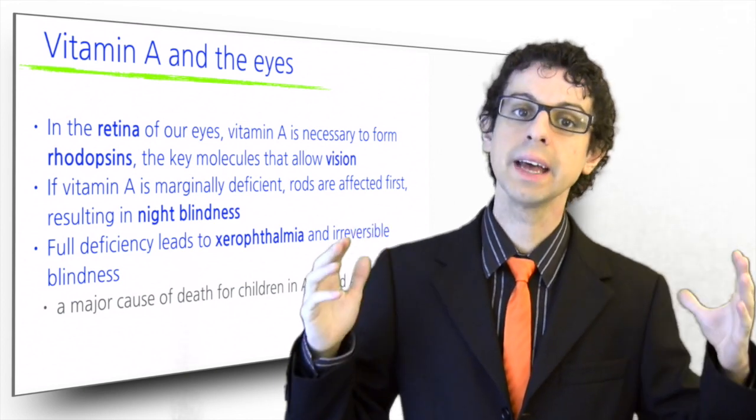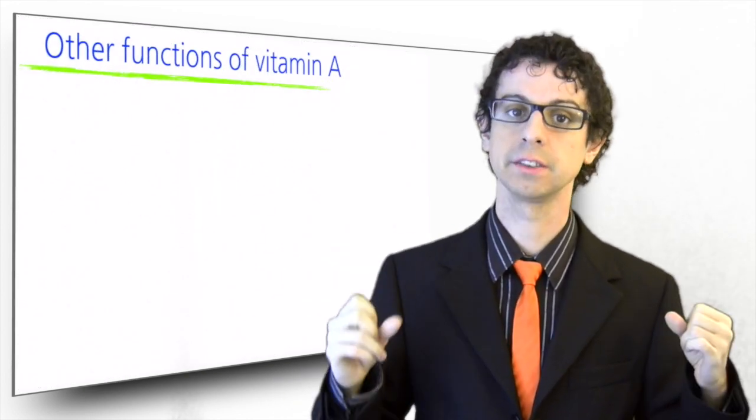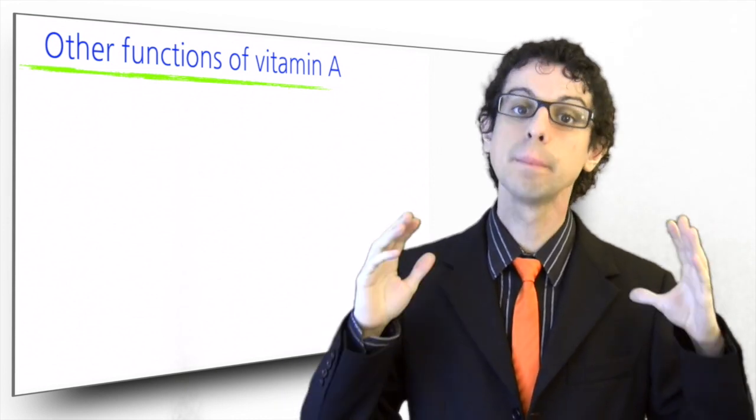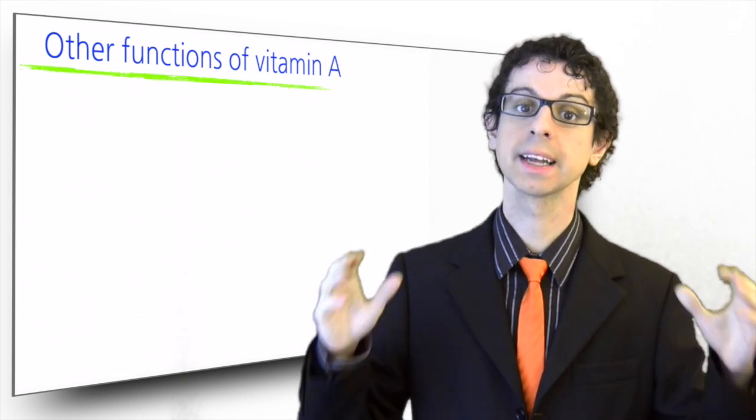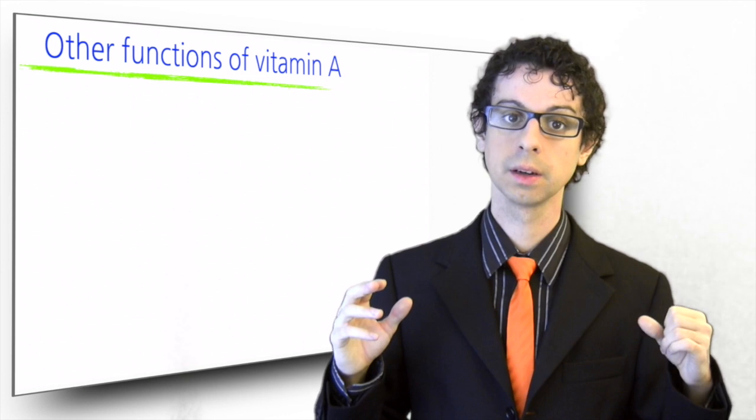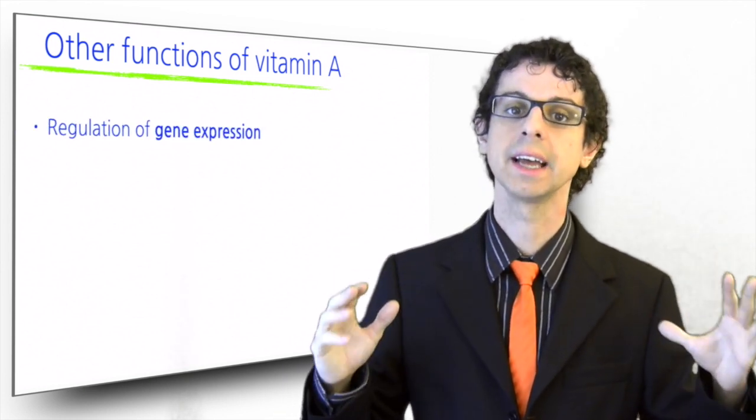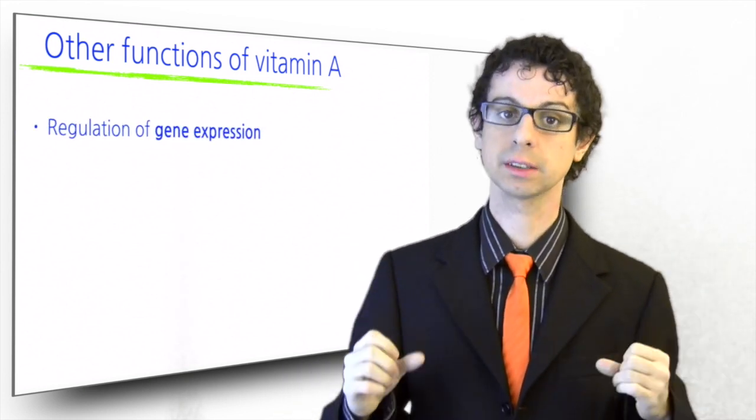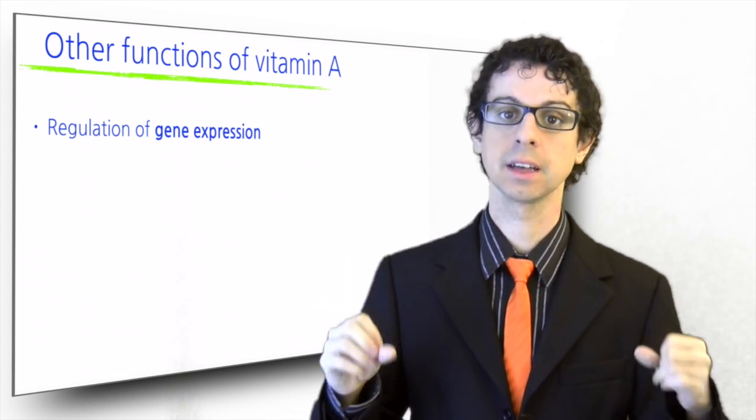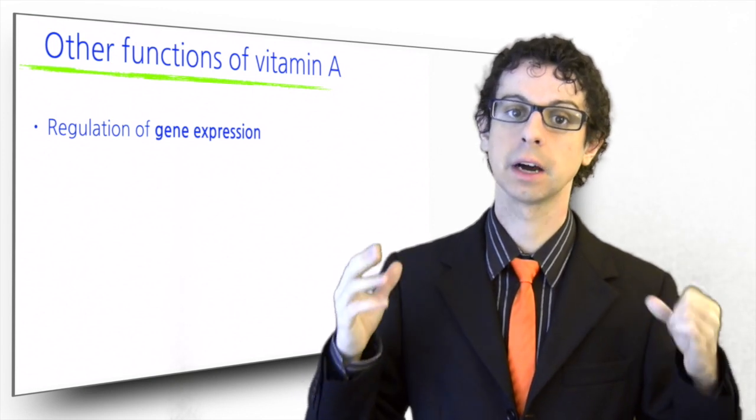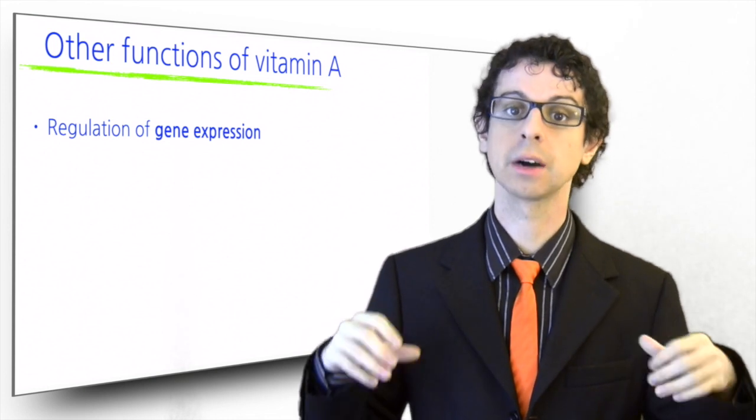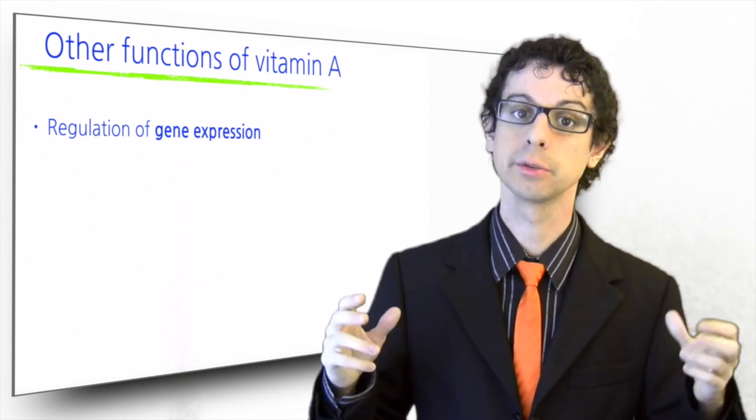Indeed, vitamin A does a lot more than just taking care of our night vision. And while full deficiencies are not common in our countries, marginal deficiencies are much more widespread and can still unfavorably impact our overall health. Vitamin A can bind to DNA and is able to regulate gene expression in many tissues in our body, and particularly our epithelial cells, those of our skin, our eyes and our mucous membranes, such as the internal surface of our mouth, our digestive tract, our respiratory tract and our urinary tract.